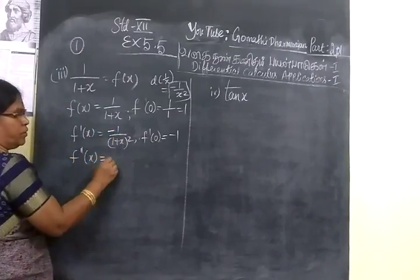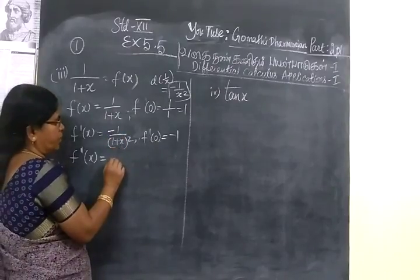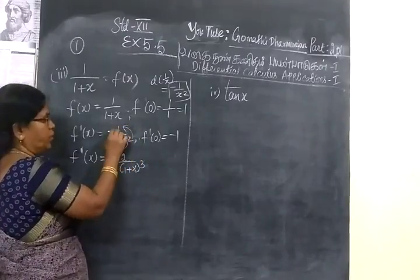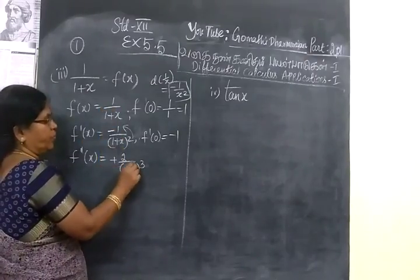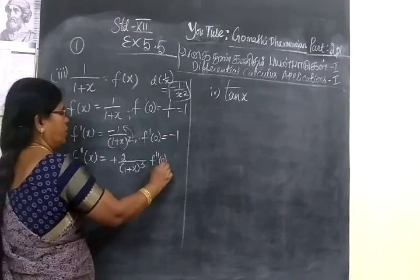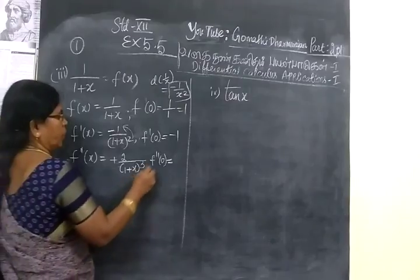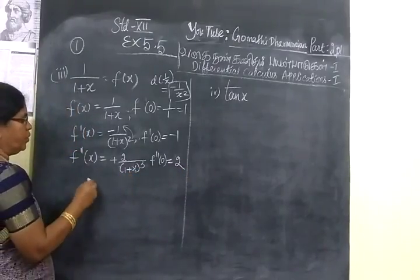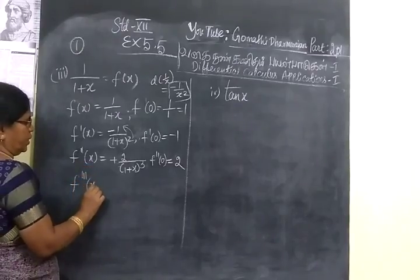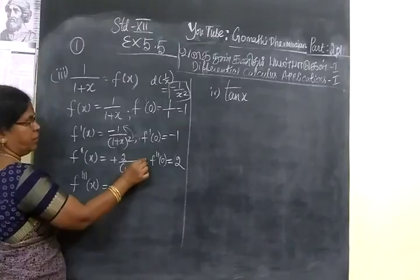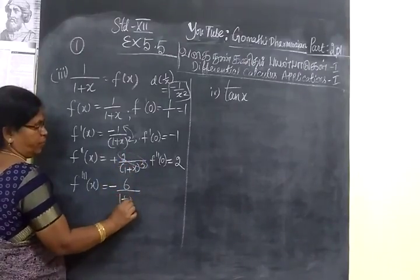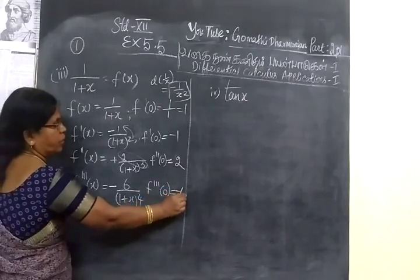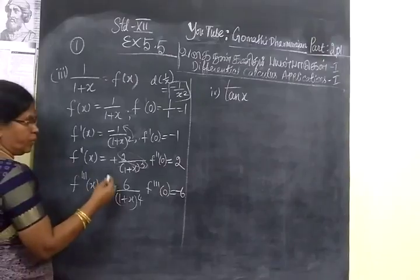Then f double dash of x. So f double dash of x. Numerator 2 will become 2. 2 will go to the numerator. Then you have triple dash of x equal to 2 is a present. This is plus minus 6. This is 2 multiply. So 3 plus by 1 plus x power 4. So f triple dash of 0 equal to minus 6. This one is going to go.